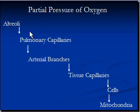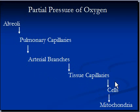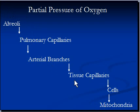The partial pressure of oxygen decreases as blood passes through the body. It is highest in the alveoli, lower in the pulmonary capillaries, even lower in arterial branches, lower still in tissue capillaries, in cells, and lowest in the mitochondria of cells — where oxygen is consumed to produce energy. This creates a gradient, with pressure gradually moving downward.